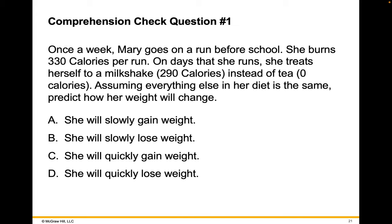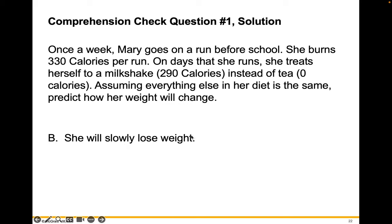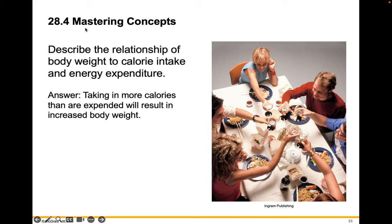Let's look at a comprehension check question. Once a week, Mary goes on a run before school and burns 330 calories. On the days that she runs, she treats herself to a milkshake — 290 calories — instead of tea, which is zero calories. Assuming everything else in her diet is the same, predict how her weight will change. She will slowly lose weight, because she's burning 40 calories more than she's consuming that day. Take a moment and describe the relationship of body weight to calorie intake and energy expenditure in your own words.